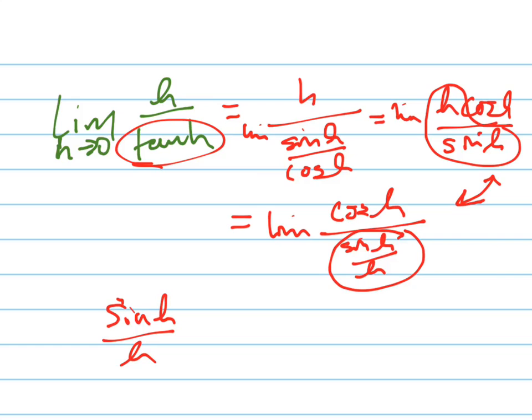It's kind of an algebra trick. This thing here, as h goes to 0, this goes to 1. And the cosine of 0 is 1. So this equals 1.